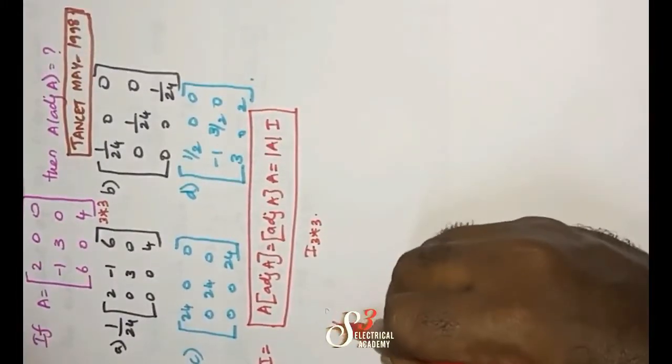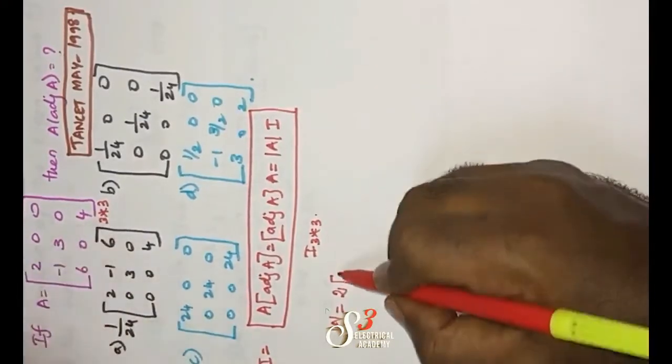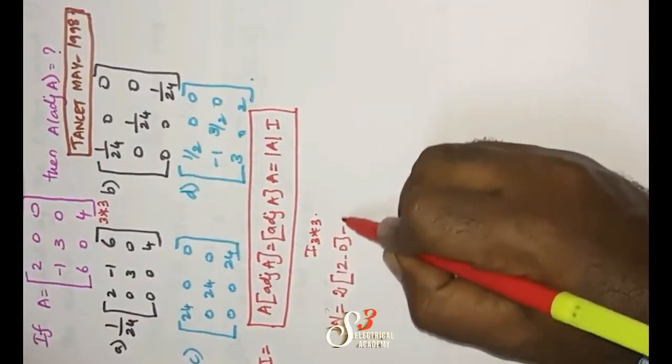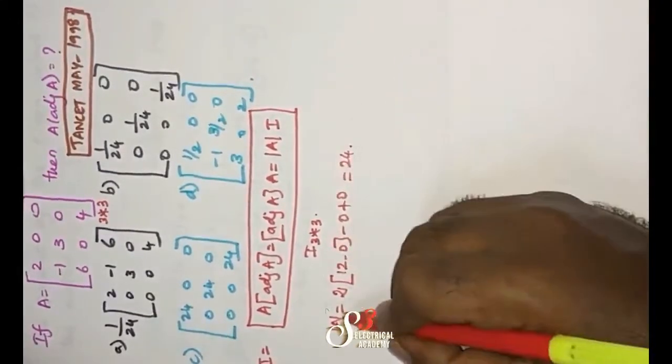First of all, we have to find out the given matrix determinant. 2 into 3 into 4. 12 minus 0 minus 0 minus plus 0 which is equal to 24. So this is nothing but determinant.